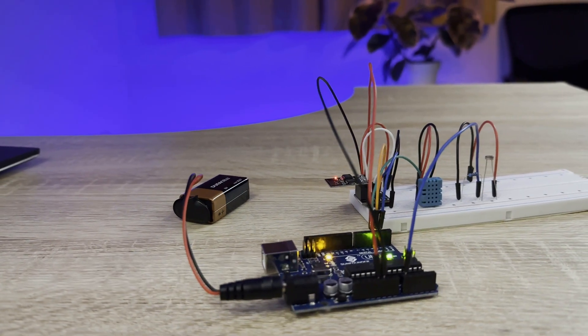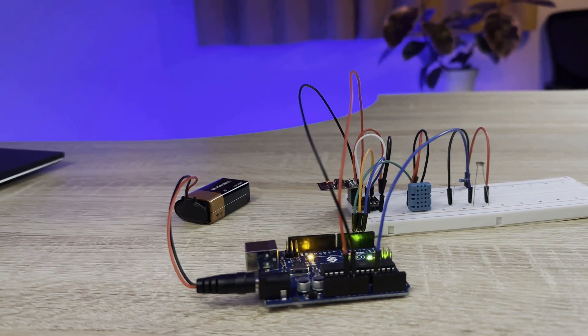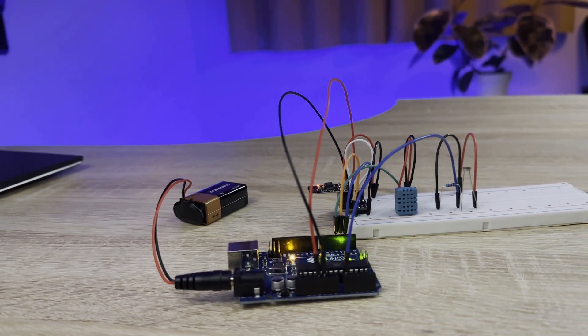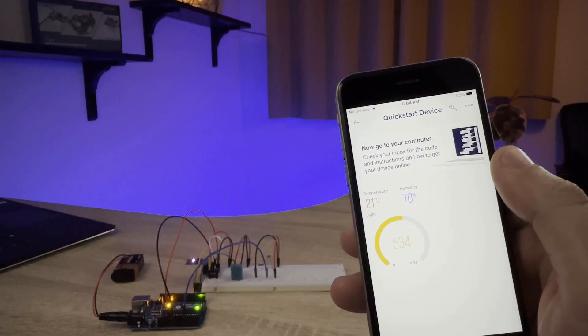Learn about the Internet of Things with a project that lets you monitor the temperature, humidity, and light level of a room from an app on your smartphone.